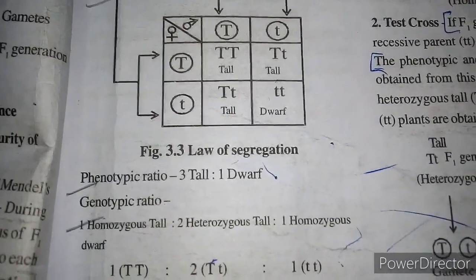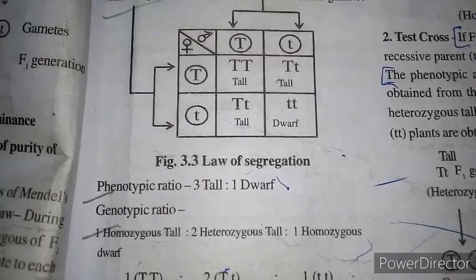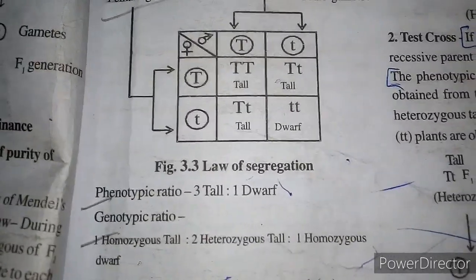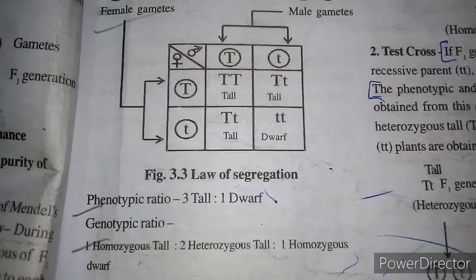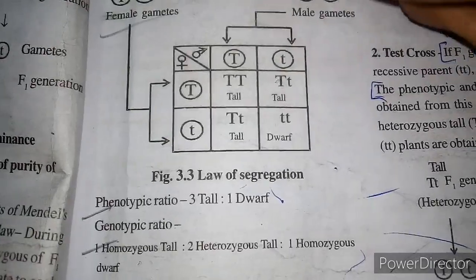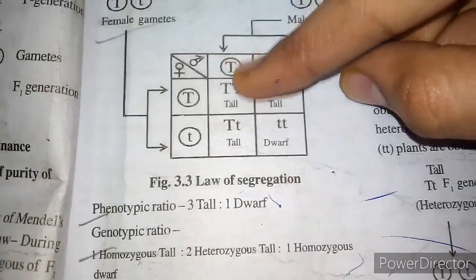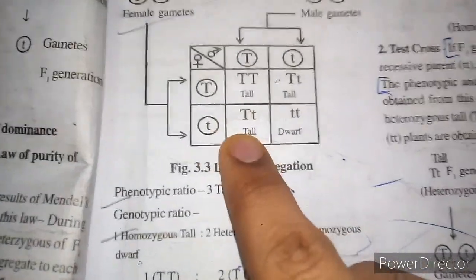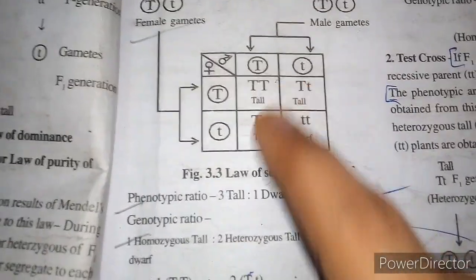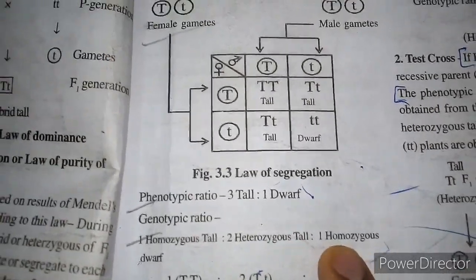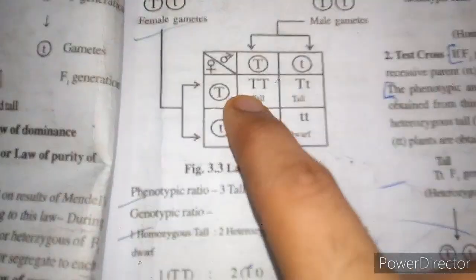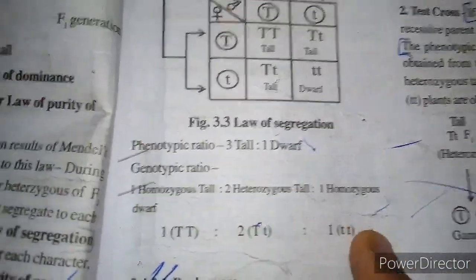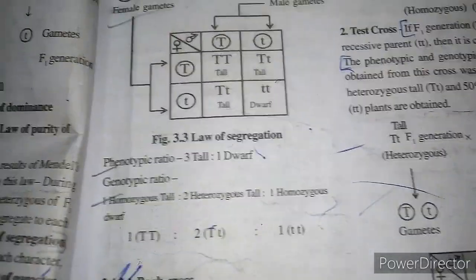The genotypic ratio is determined by homozygous and heterozygous combinations. There is one homozygous dominant (TT), two heterozygous (Tt), and one homozygous recessive (tt). So the genotypic ratio is 1 : 2 : 1. This completes the law of segregation.